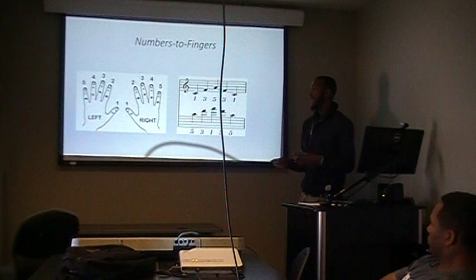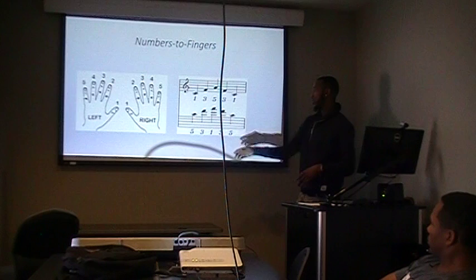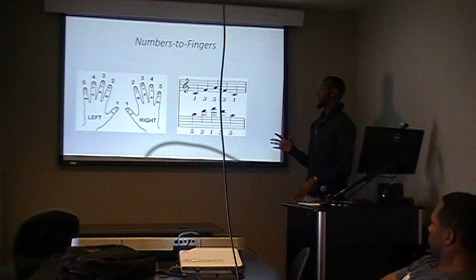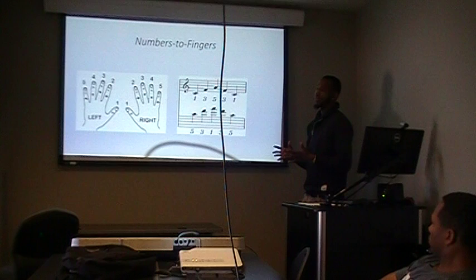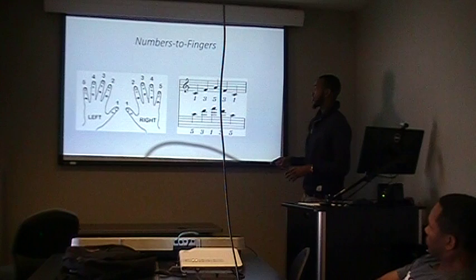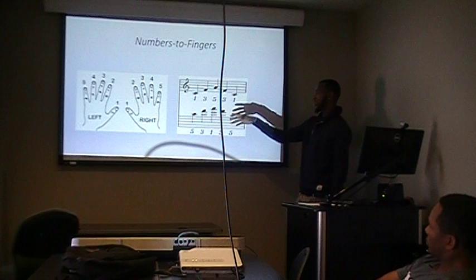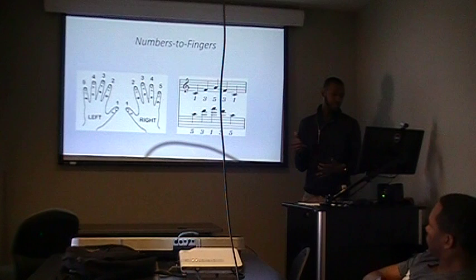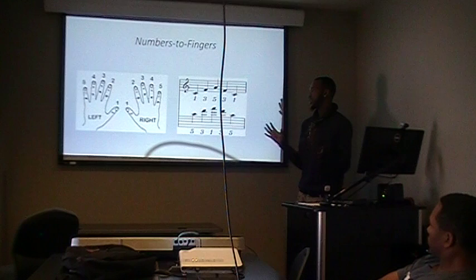Once you know the labels of the keys, you need to know that the numbers found on the left panel are linked to your fingers. Every finger has a number. For the thumb, it's considered one. So when you see a number one under a note on the sheet music, it means you play that note with your thumb, and so on with two, three, four, and five. This gives you an idea of what the numbers mean when you come to sheet music in the future.